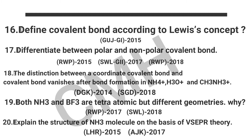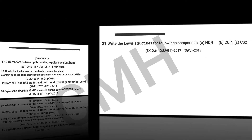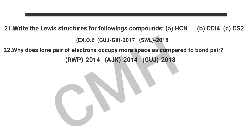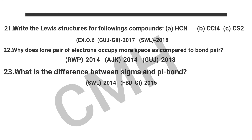Question number 19: Both ammonia and PF3 are tetra-atomic but have different geometries — why? Question number 20: Explain the structure of the ammonia molecule on the basis of VSEPR theory. Question number 21: Write the Lewis structures for the following compounds: (a) HCN, (b) CCl4, (c) CS2.